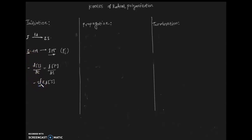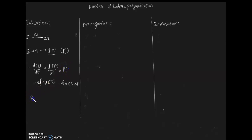F is the ratio of radicals that incorporate into the polymer to the total number of initiator radicals formed, and F lies between 0.3 and 0.8. Therefore, our rate of initiation equals two times F times our dissociation constant times our initiator concentration.